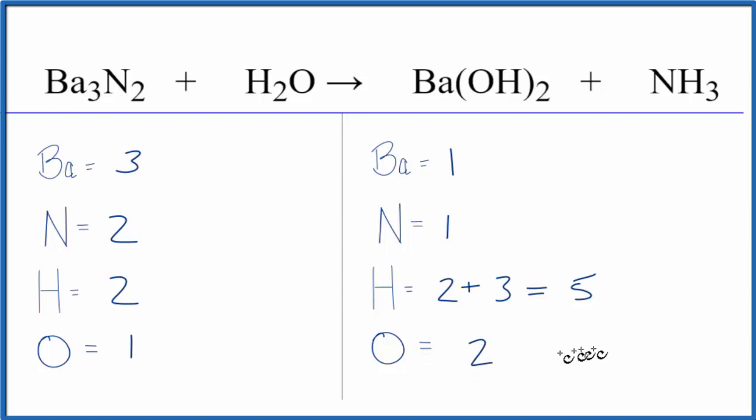I think what I'll do is maybe leave the hydrogens and the oxygens till last. Let's fix the barium first. So if we put a coefficient of three in front of the barium hydroxide, one times three, that'll give us three barium atoms. Those are balanced, but now we need to update the oxygens and the hydrogens. So let's do that.